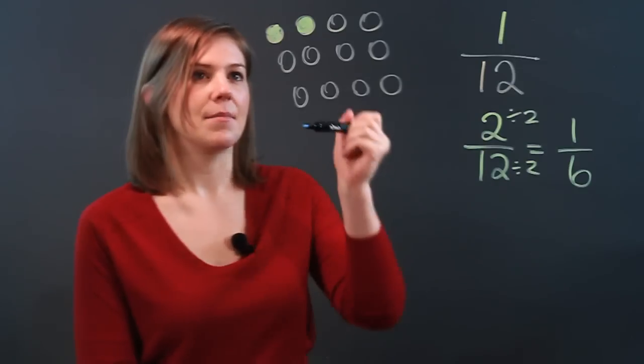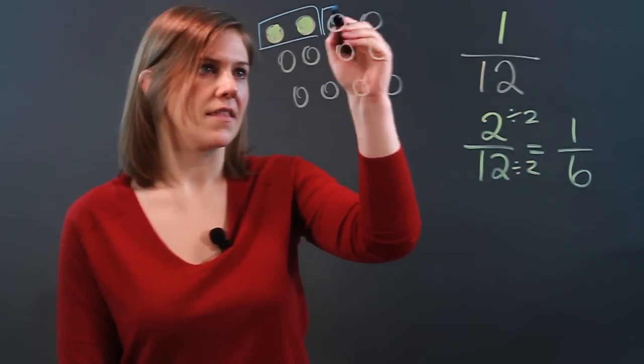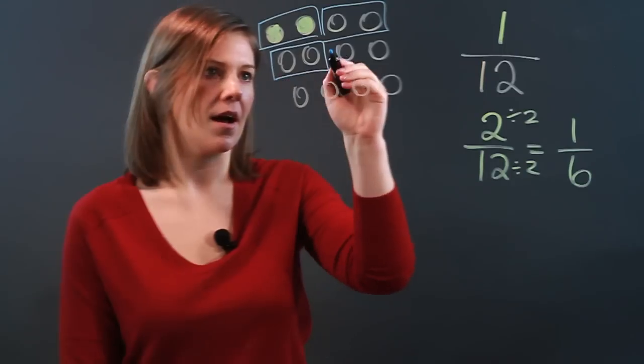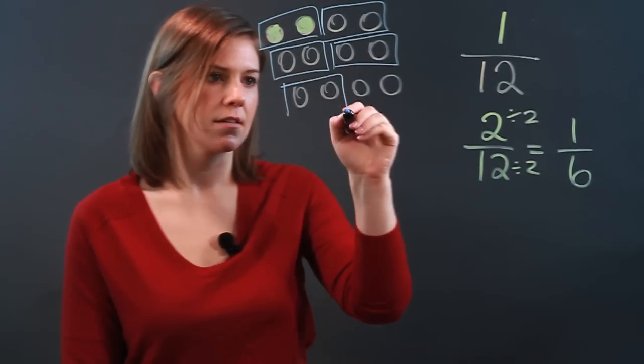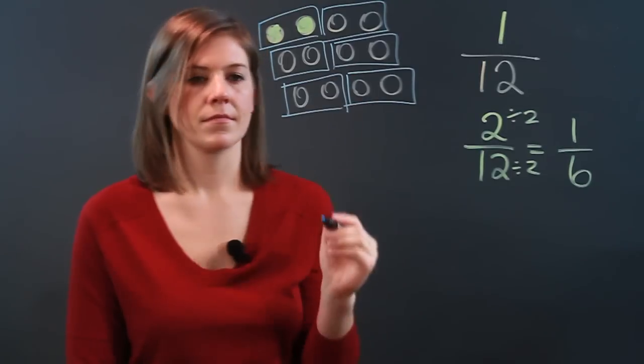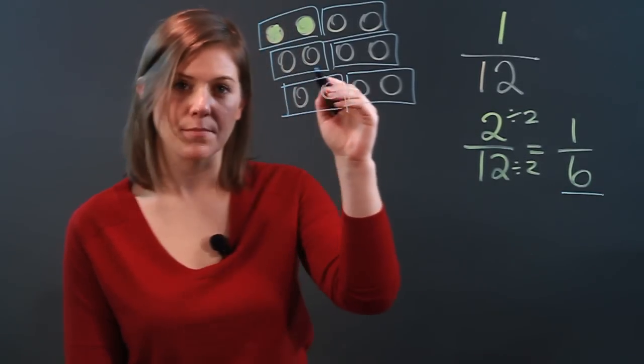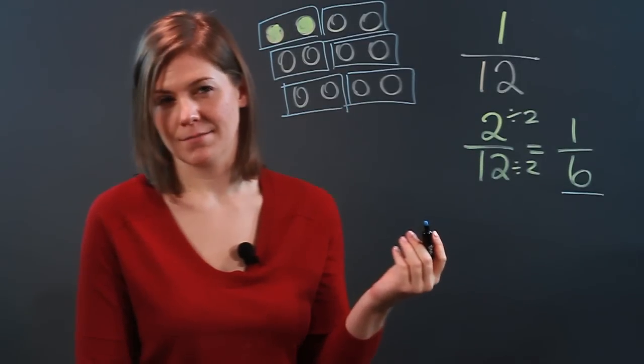But you can also see it in the matrix we have here because we could also say that the whole is made out of six sets. So that the whole here is actually six. And these blue squares represent those six.